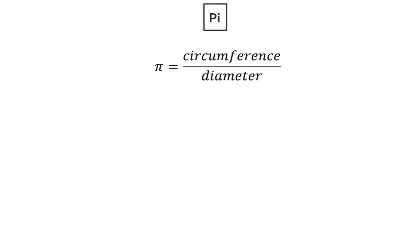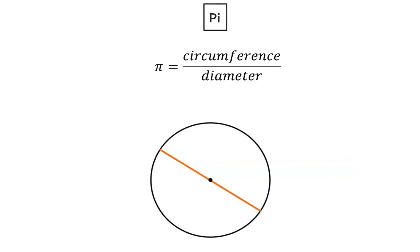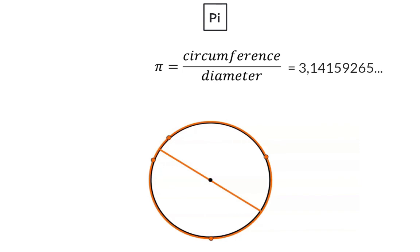But what is the value of this ratio? When you take the diameter of a circle and fold it around the circumference, you will see that you need one, two, three diameters and then another extra part of the diameter to move right around the circle. This ratio of the circumference and diameter of a circle is an infinite decimal.